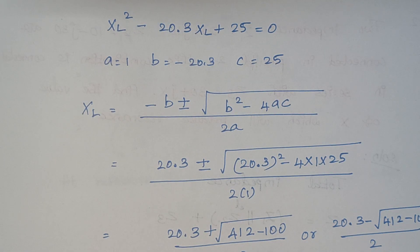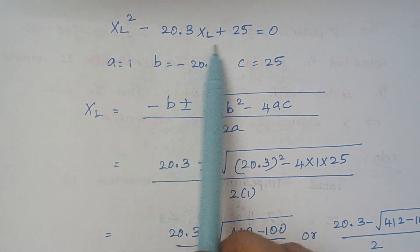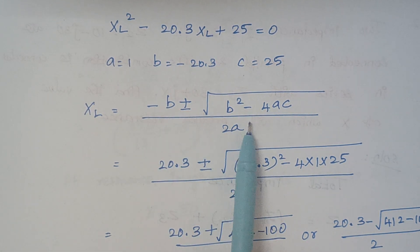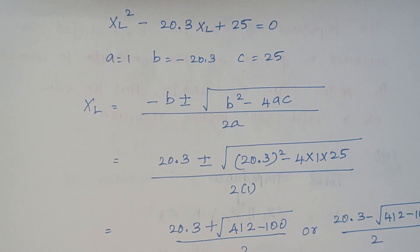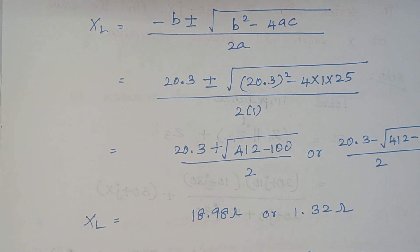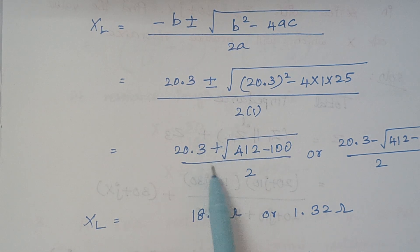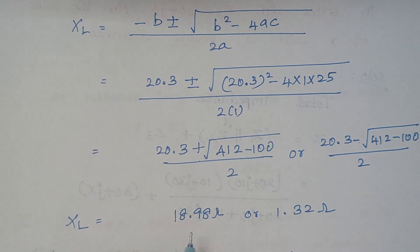Now we solve the quadratic equation. You can use a calculator, but here are the normal steps. Write down the values of a, b, and c from the quadratic equation and apply the formula: minus b plus or minus root of (b squared minus 4ac) divided by 2a. Substituting the respective values, we end up with two values of XL because of the plus or minus. Considering the plus term first, then the minus term, the value of XL is 18.98 ohms or 1.32 ohms.